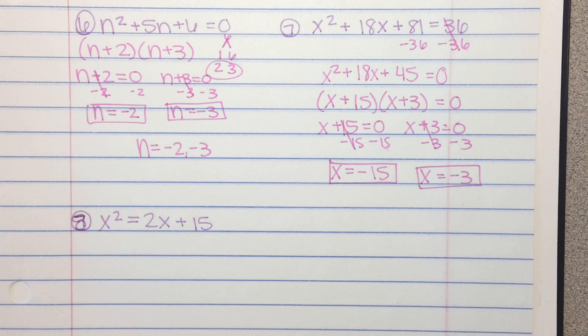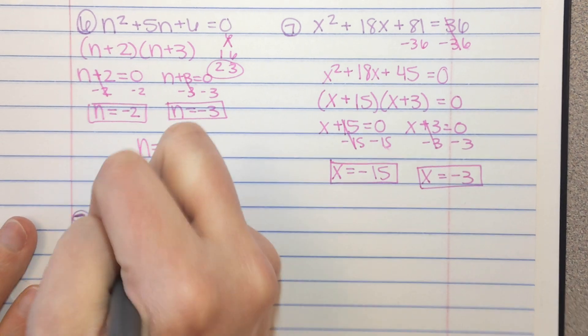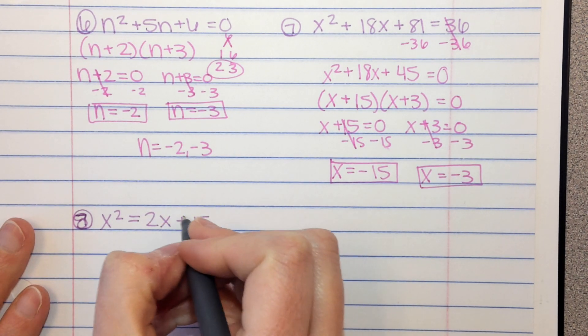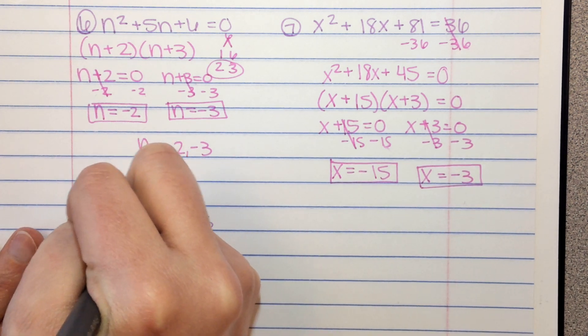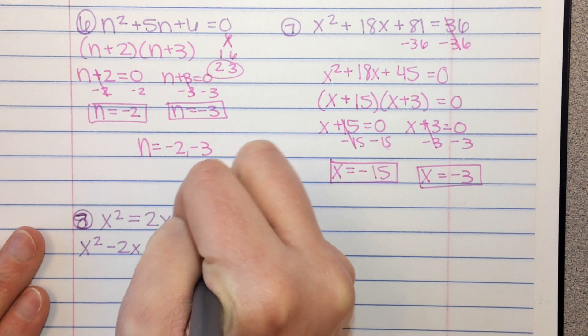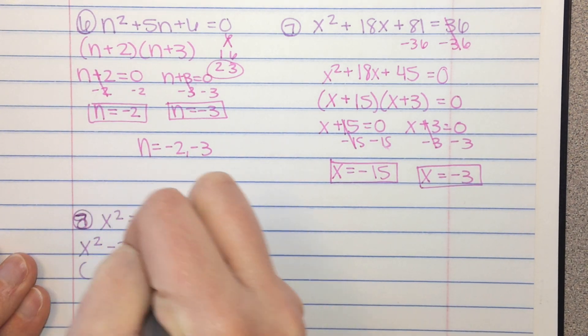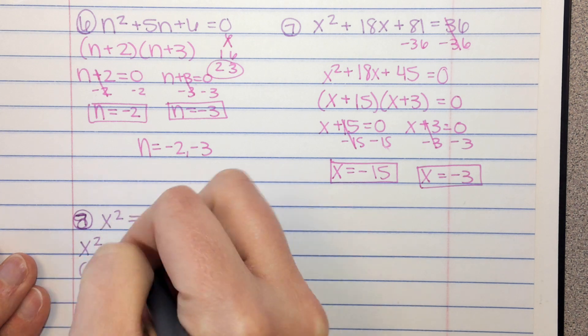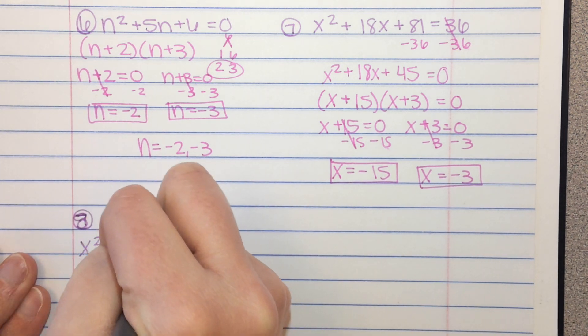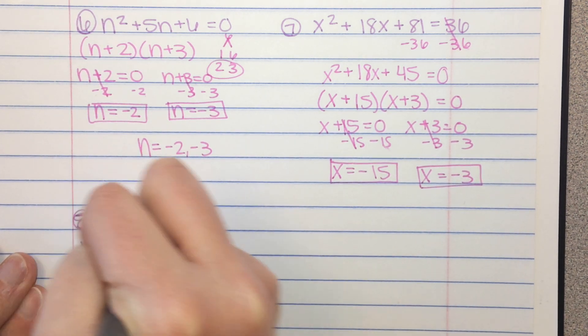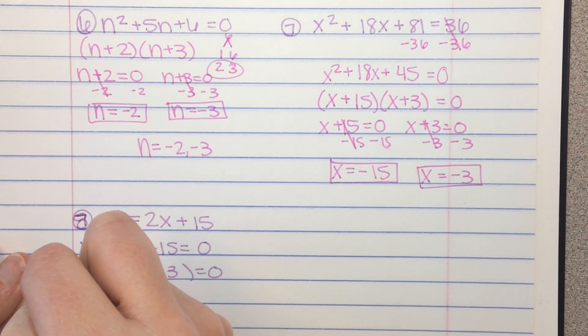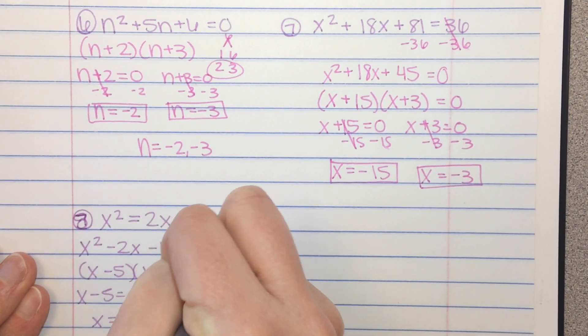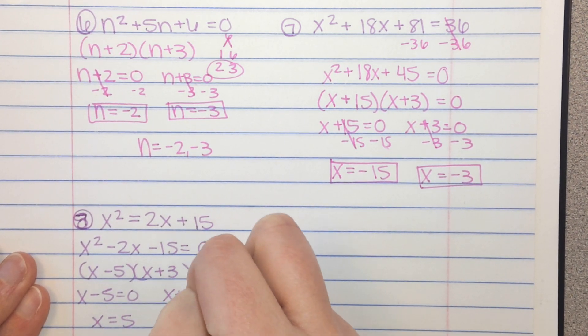Here's example number 8. Give it a try. See what you can get. Let's check it. First, we have to get it set equal to 0, so we need to get all this moved to the other side of the equal sign. So x squared minus 2x minus 15 equals 0. We need to factor that. Factors of negative 15 that will add and give me negative 2. I think that's going to be negative 5 and positive 3. Set those equal to 0. Get x equals 5. And x equals negative 3.